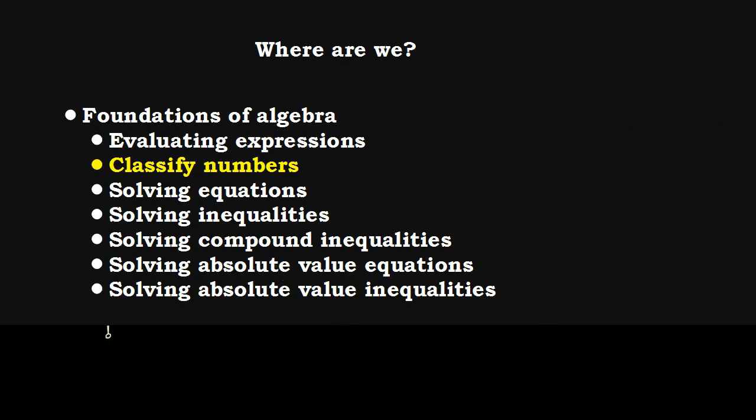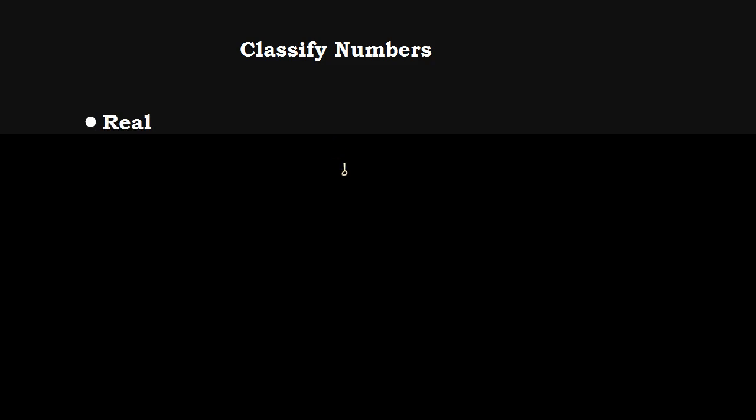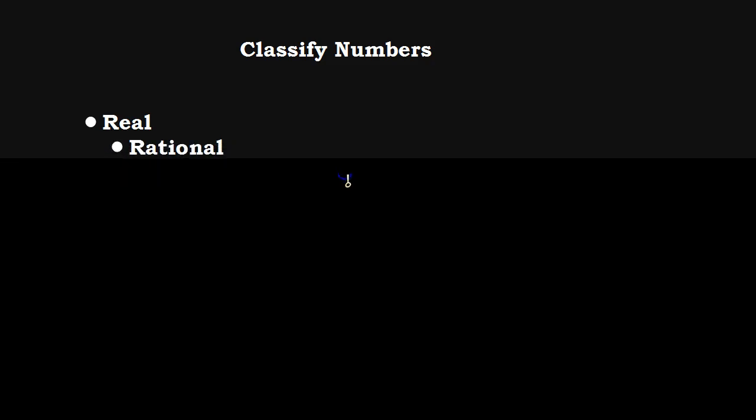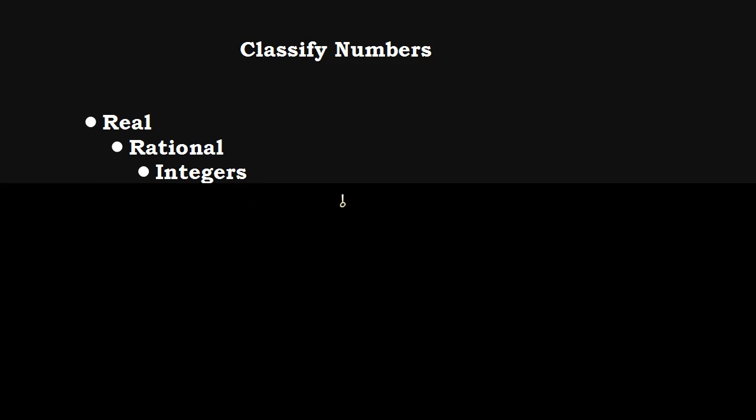So let's take a look. Fortunately, most of the numbers we've looked at all fall under one big category, and that's the category of real numbers. Under real numbers, there is this concept called rational numbers. Every rational number is a real number, and rational numbers are numbers that can be made into a fraction. Then there's integers. Every integer is a rational number and every integer is a real number.